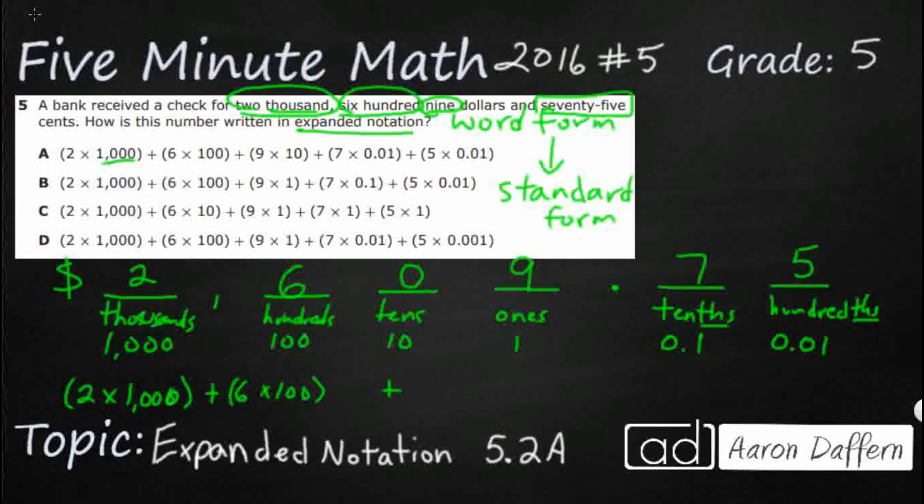We're going to take our digit in the ones place. Nine. Times the value. Even these smaller ones. Digit in the tenths place. Seven. Times it by its value. Zero point one. Digit in the hundredths place. Five. Multiply by its value.